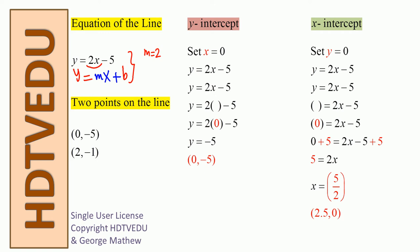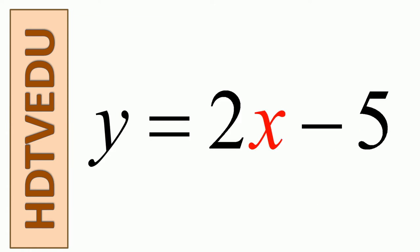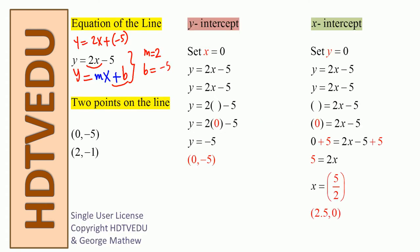So we know what m is. How about b? We have 2x minus 5, which is the same as 2x plus negative 5. When you compare y is equal to mx plus b and y is equal to 2x plus negative 5, we see that b is equal to negative 5. So we have m is equal to 2, slope is equal to 2, y-intercept is negative 5. We have one point (0, negative 5) and the other point is (2, negative 1). So we can join those two and get a line.